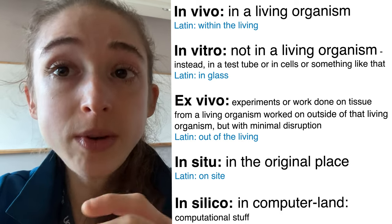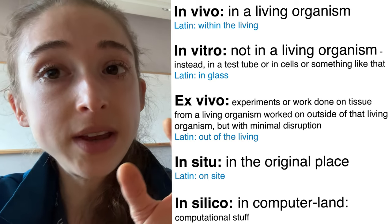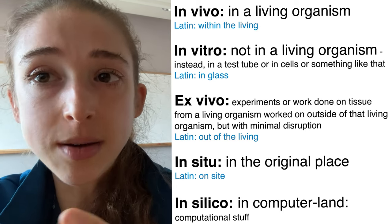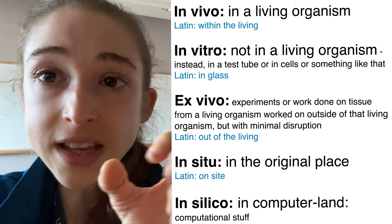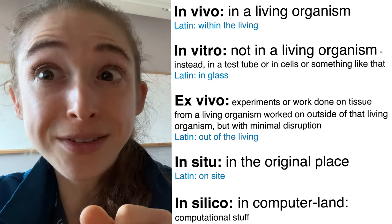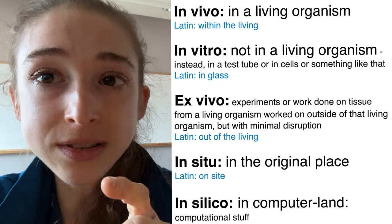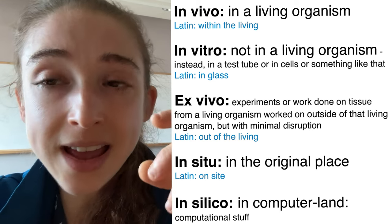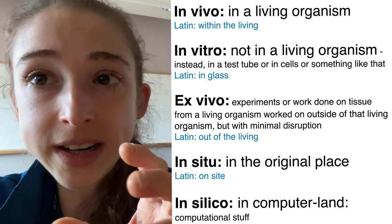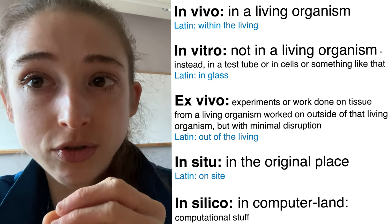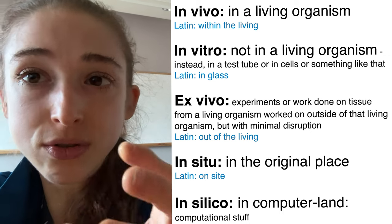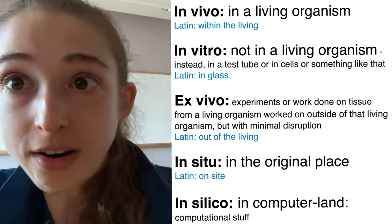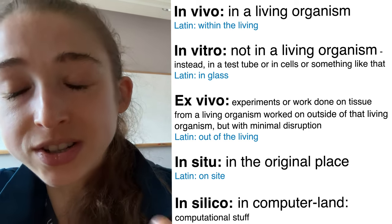Just to review: we have in vivo, which is in an organism. Then we have in vitro, and there are different levels. Super in vitro is in a test tube with individual components mixed together. Then we have in cells, which is a little more realistic. We also have in organoids, which is even more realistic — but all of those are outside of the living organism, in some sort of artificial controlled setting where we're optimizing things to grow and can manipulate conditions so there aren't too many variables confusing our experimental results.